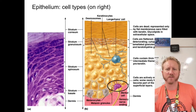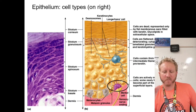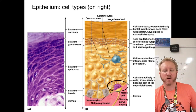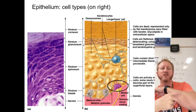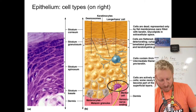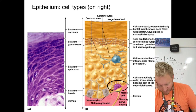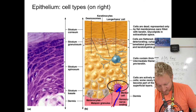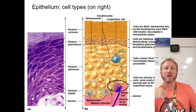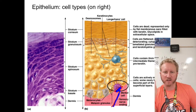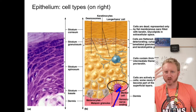Next are Merkel cells, which look a bit like a jellyfish hat. They're associated with sensory nerve endings and act as touch receptors. The Merkel cell is like a sensor and the nerve ending is like a wire sending signals to your brain.